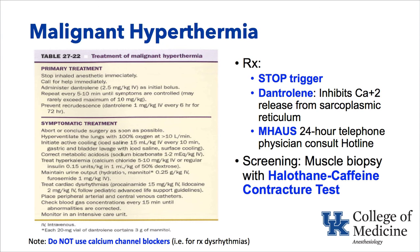Call the MH hotline and get help if you need it. It is a 24-hour telephone physician consult hotline where you can talk one-on-one with a physician to guide you through treatment. Screening for MH is with a muscle biopsy and exposure of that muscle to halothane and caffeine, which causes contracture — the classic halothane-caffeine contracture test used to evaluate malignant hyperthermia susceptibility.